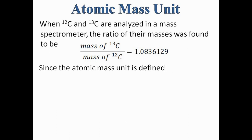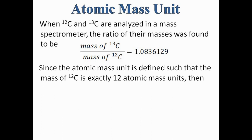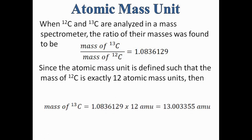Since the atomic mass unit is defined such that the mass of C12 is exactly 12 atomic mass units, the mass of C13 can be calculated using this equation. The mass of C13 is obtained by multiplying the mass of C12 by 1.083629, giving a value of 13.003355 AMU.